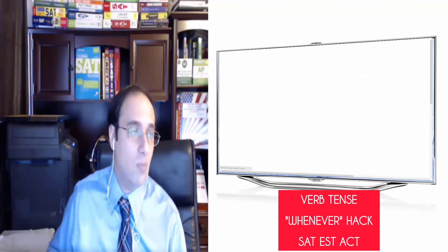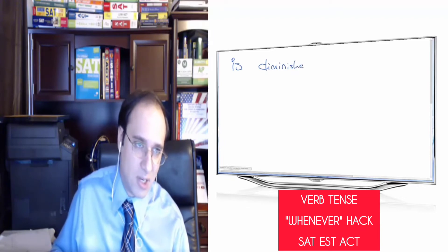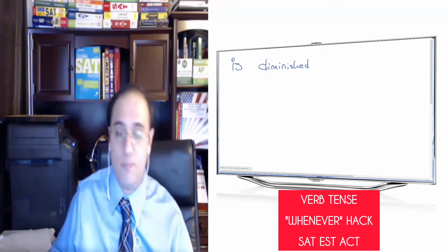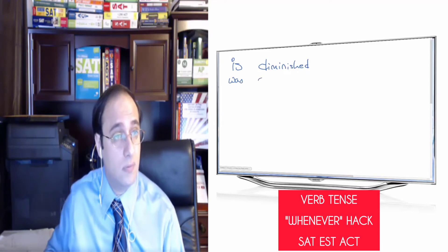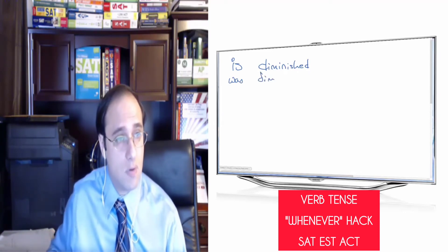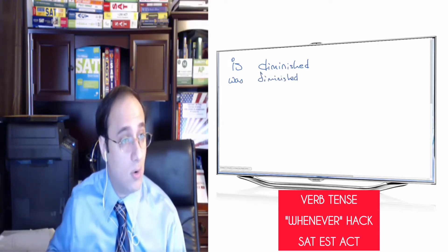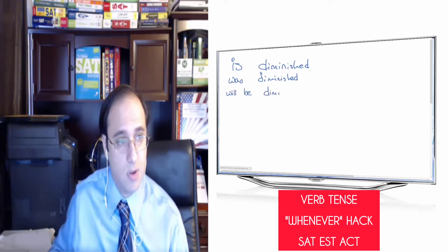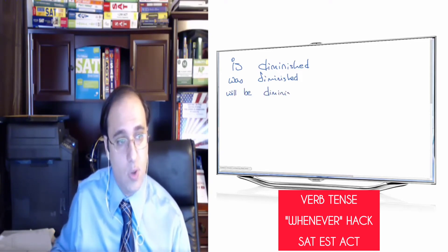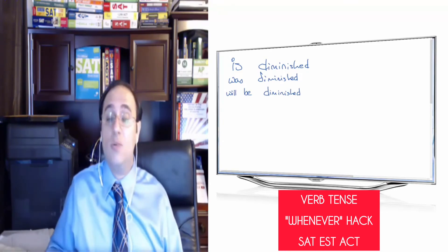I can say 'is diminished' — that's present. I can also say 'was diminished' — that's past. And I can say 'will be diminished' — that's future. So the first verb carries the tense: present, past, or future.